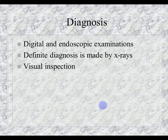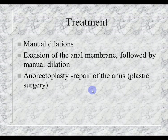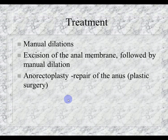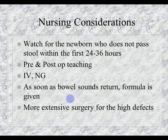Diagnosis includes digital and endoscopic exams and visual inspection. Treatment ranges from manual dilatations and excision of the anal membrane to anorectoplasty for high lesions — repairing the anus, creating sphincters, enlarging the rectal opening, and repairing the fistula. A colostomy may be needed for high lesions. Nursing considerations include watching for newborns who don't pass stool within the first 24–48 hours, confirming anal opening, pre- and post-op teaching, initiating NG feeding as soon as bowel sounds return.